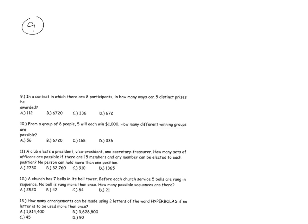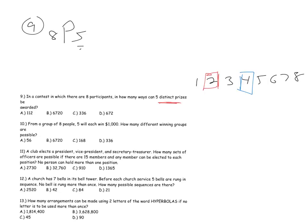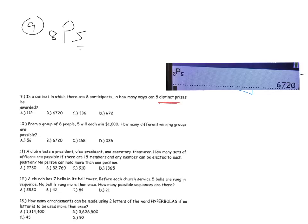Problem nine: in a contest with eight participants, how many different ways can five distinct prizes be awarded? The key word is distinct. If you win prize two, that's different from winning prize four — different prizes matter. Since the prizes are distinct and order matters, this is a permutation: 8P5, or 6,720.